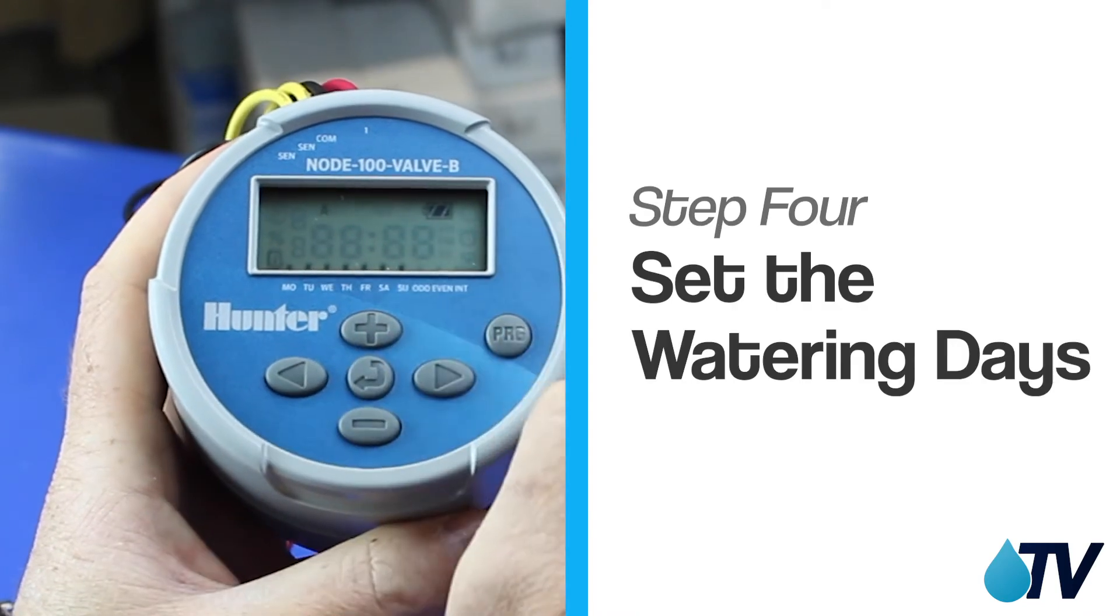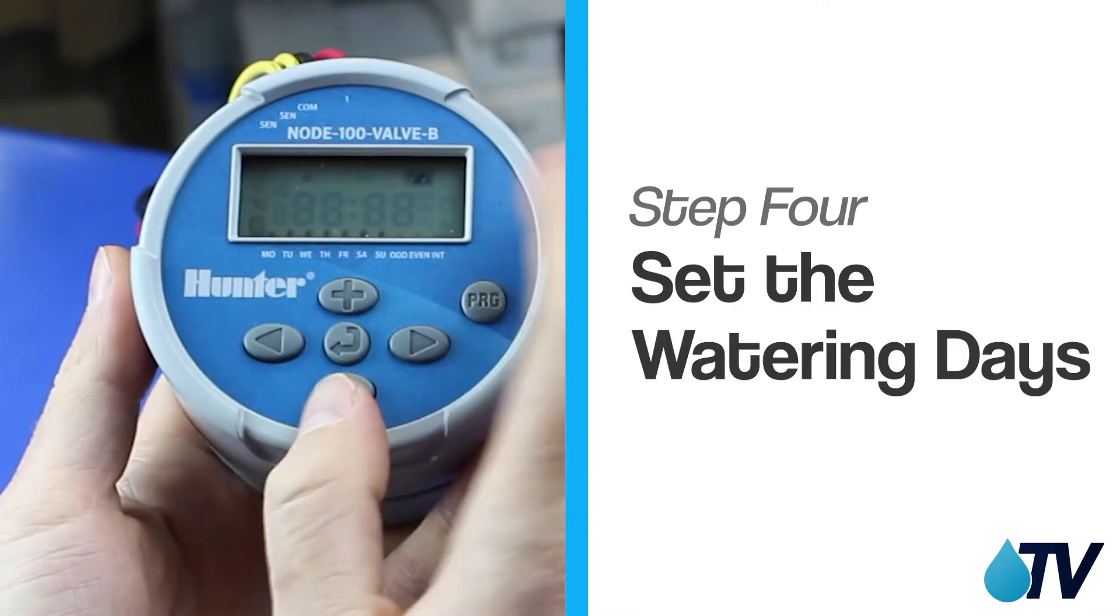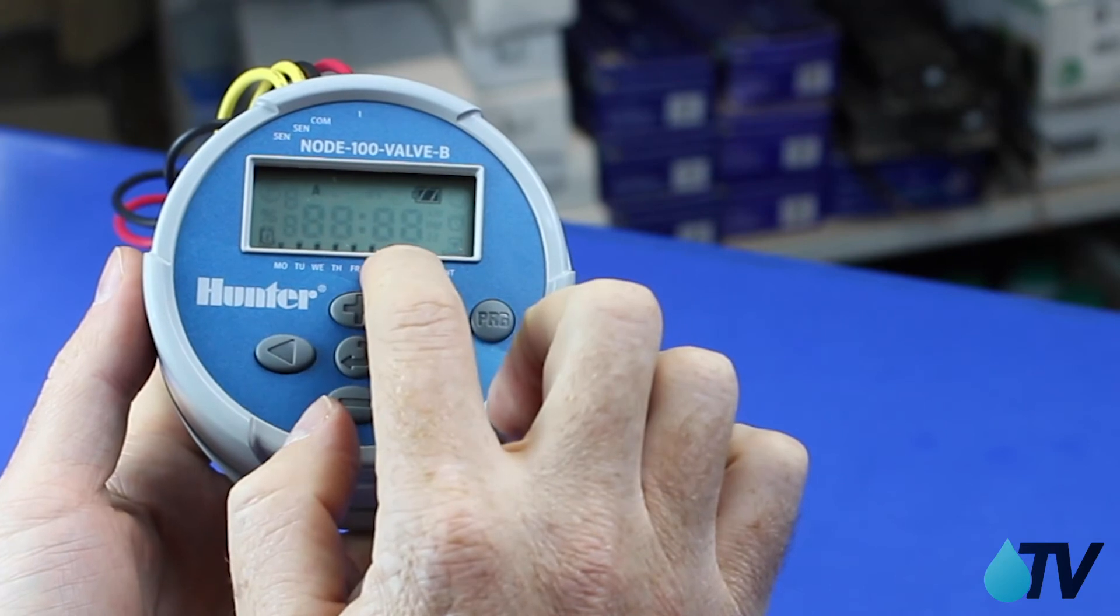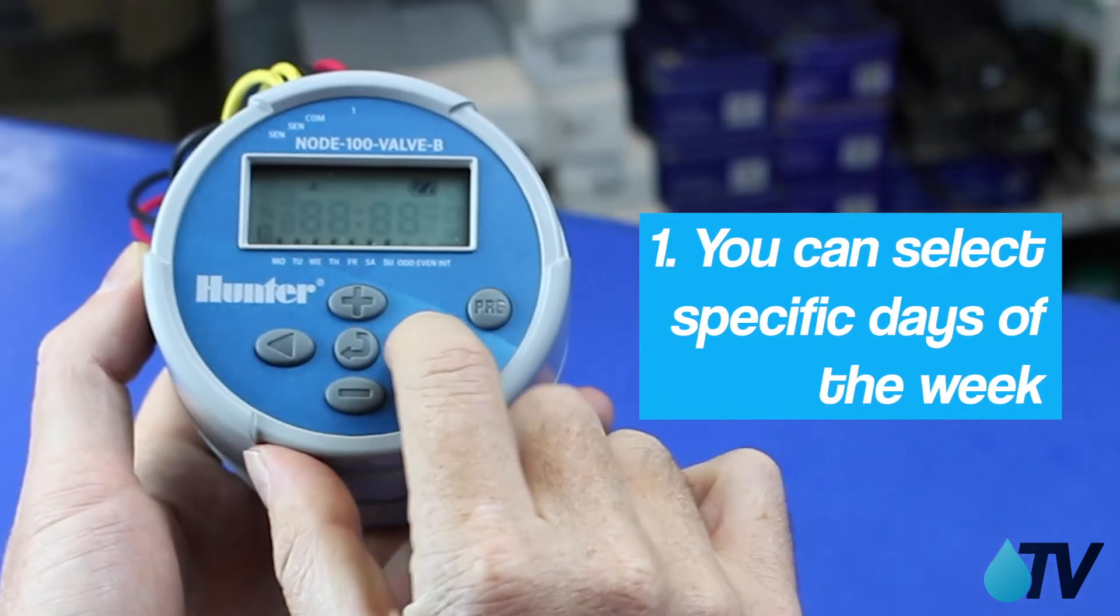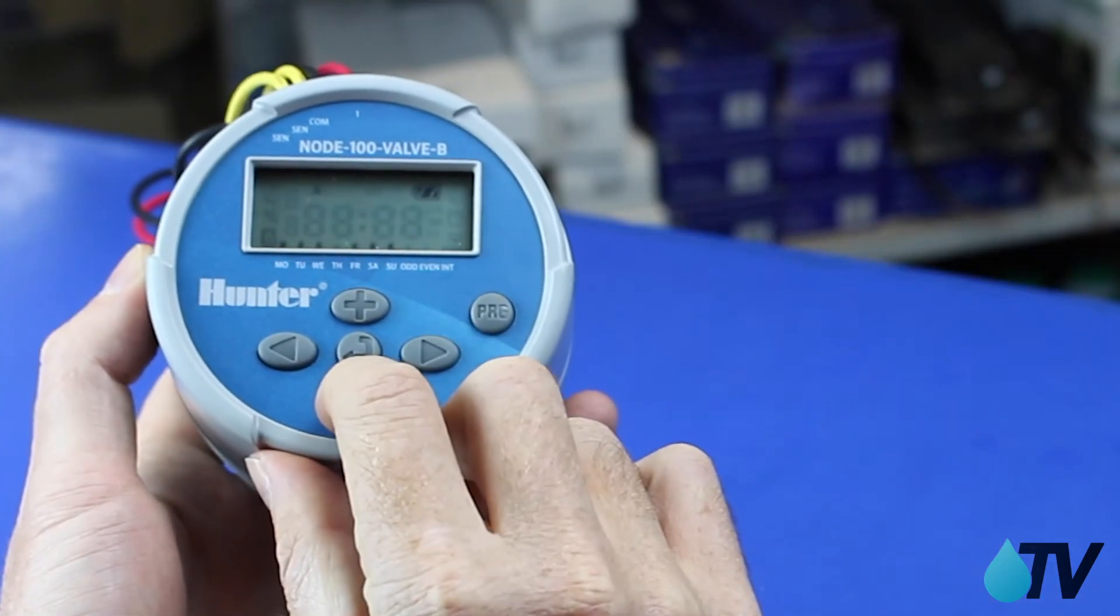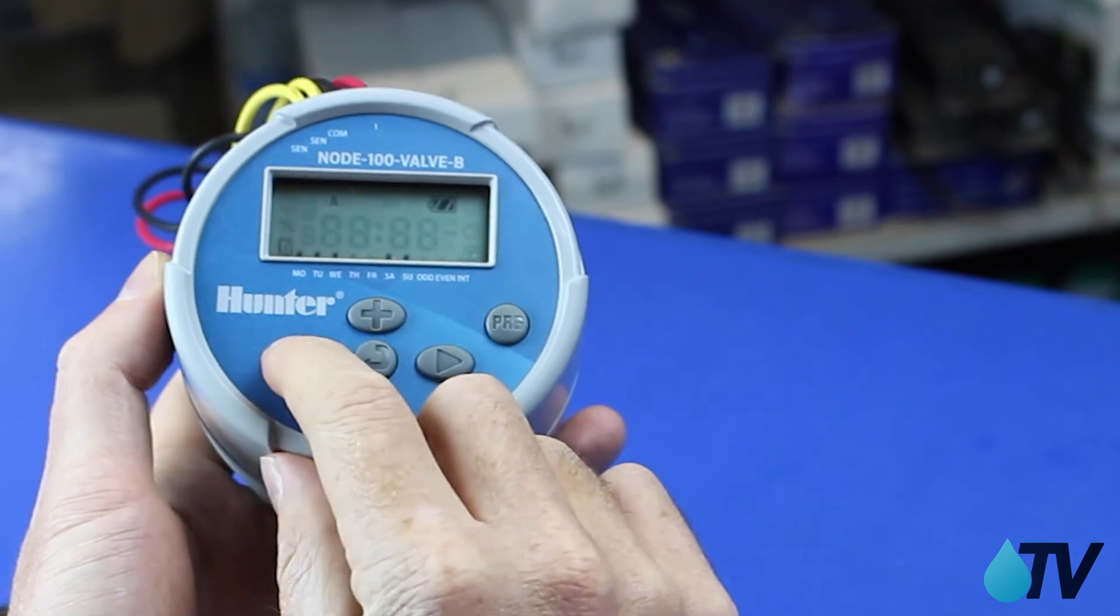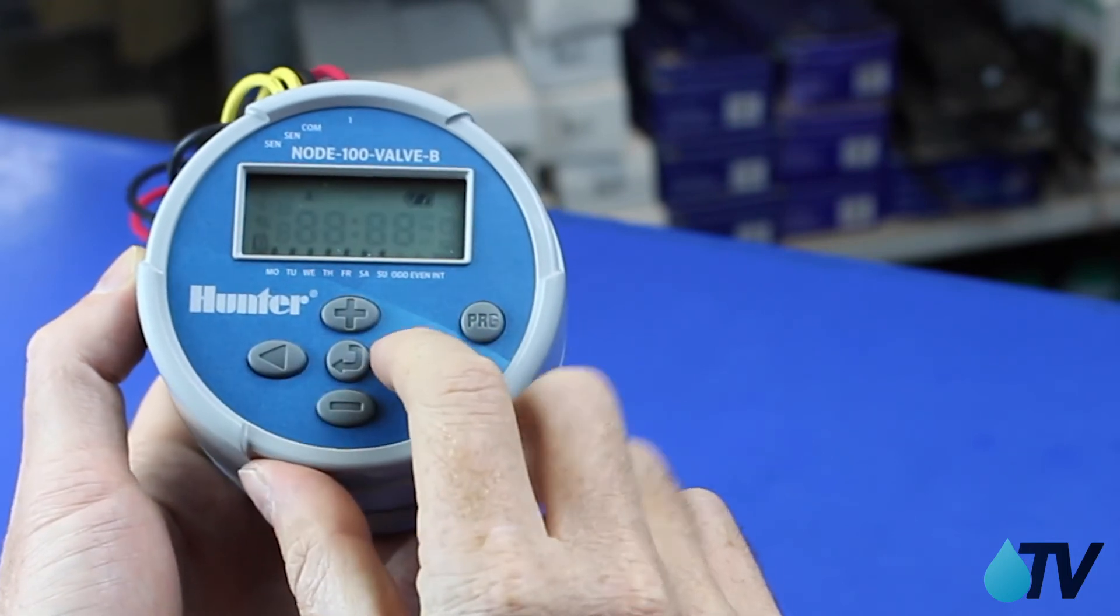And now we can move on to the days of the week we want it to water. It shows all of the days of the week on. Press our play button to work our way through. I can turn any of those days off. Move on to the next one. I don't want to. So let's just leave it there like that.